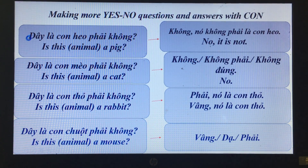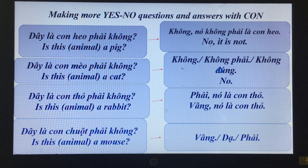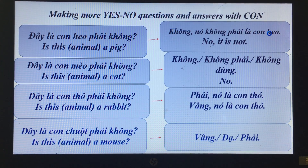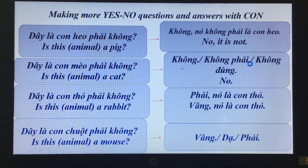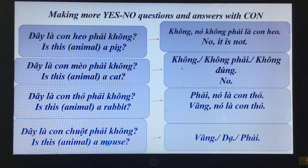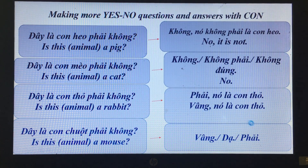Now read with me again: 'Đây là con heo phải không?' — 'Không, nó không phải là con heo.' 'Đây là con mèo phải không?' — 'Không, không phải, không đúng.' 'Đây là con thỏ phải không?' — 'Phải, nó là con thỏ.' 'Đây là con chuột phải không?' — 'Vâng, dạ, phải.' Good.